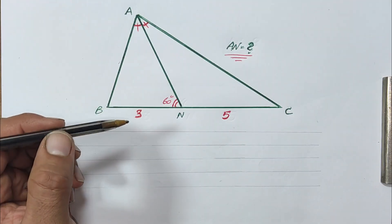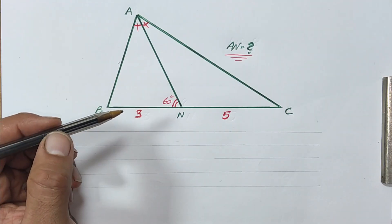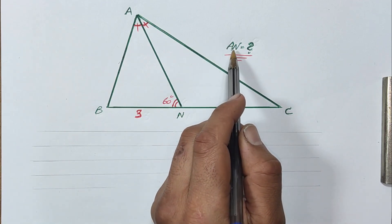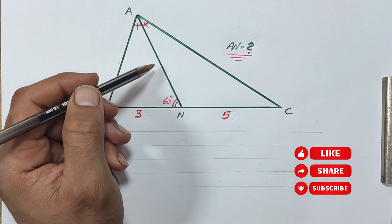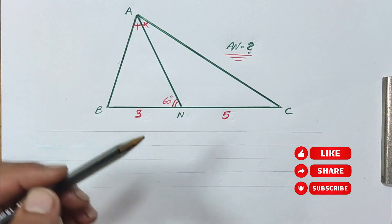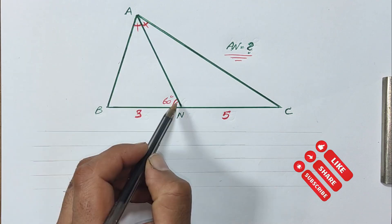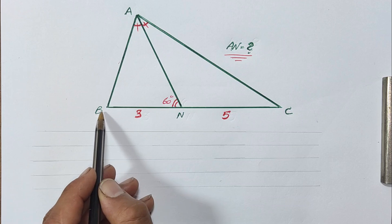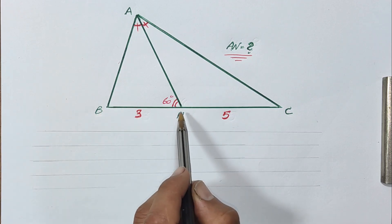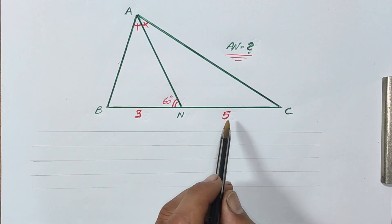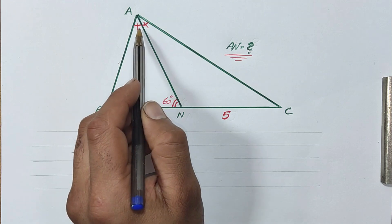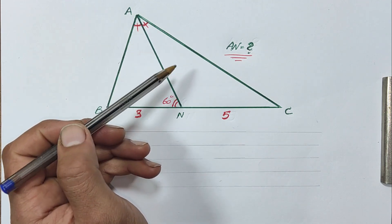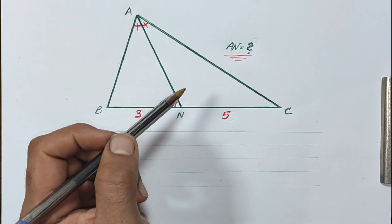Hey everyone, welcome to geometric. Here's another geometry problem. The main question is to find AN — AN is the side we need to find. Given information: the angle here is equal to 60°, the side BN is 3, the side NC is 5, and we have two equal angles.